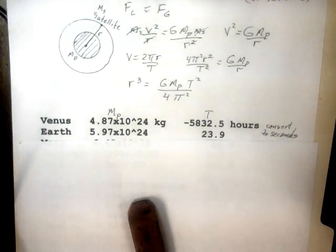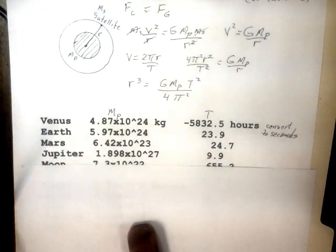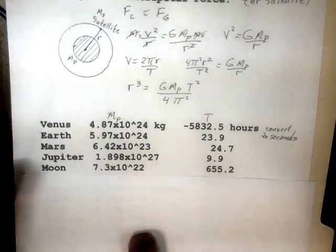23.9 hours is the spin relative to the stars - this is not measured with relationship to position of the sun in the sky, it's the raw rotation spin of the earth. Mars is 24.7 hours, Jupiter 9.9 hours, and just for fun I put in the moon. The moon spins once on its axis every 655 hours as it moves around the earth.